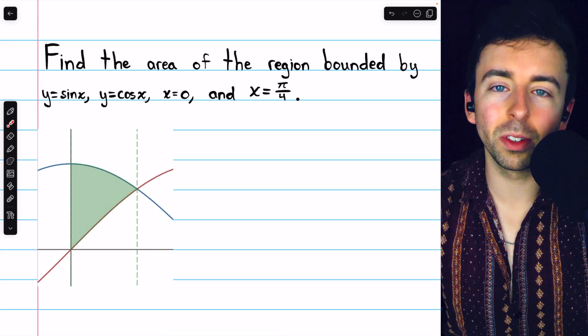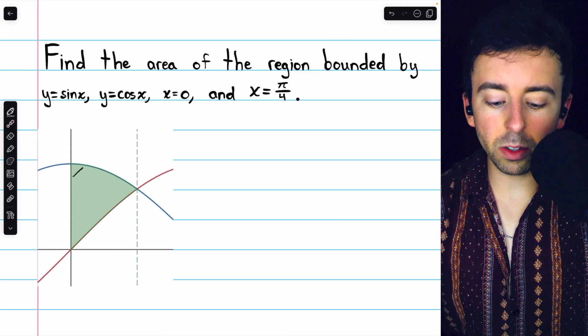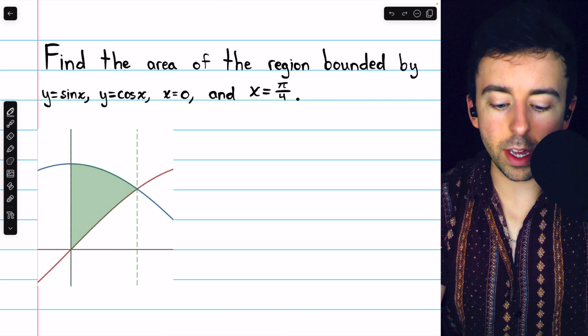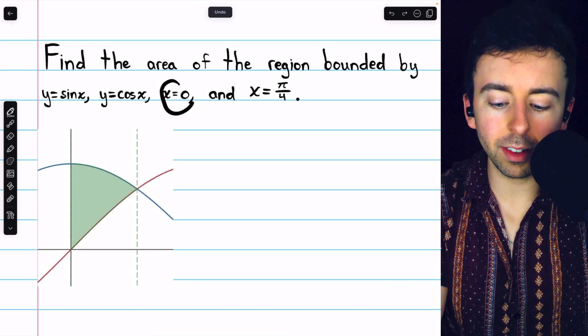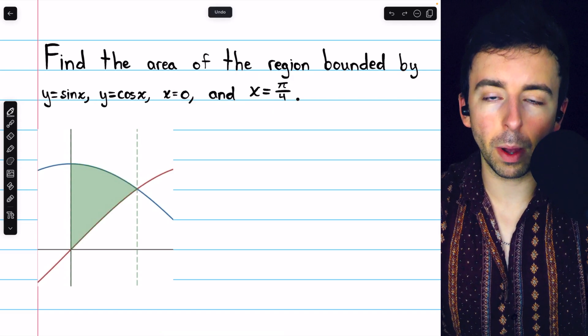You should know that sine and cosine are equal there. Now, to find this area, we need to integrate the upper function minus the lower function from x equals zero to x equals pi over four.